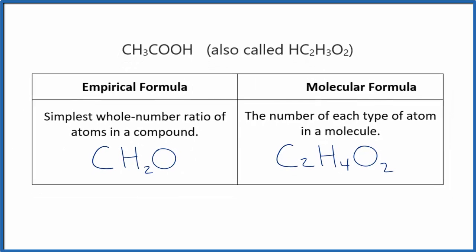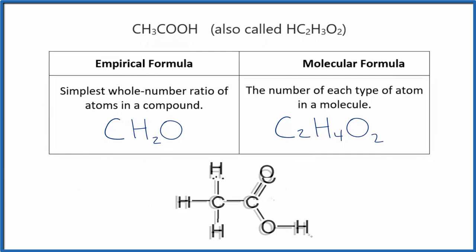If we wanted to look at the structural formula, that would look like this. The structural formula is based on the molecular formula. If we look at it, we have our two carbons, four hydrogens, and then two oxygens. This shows us the way that the atoms are arranged.